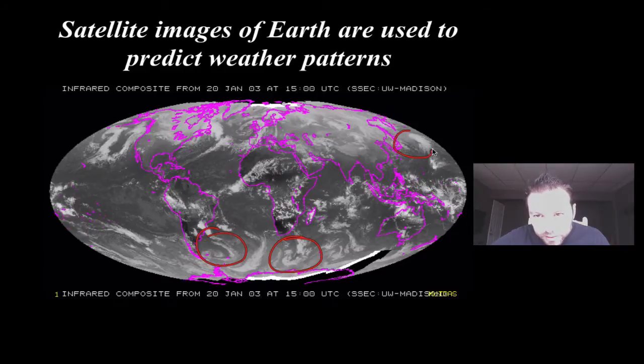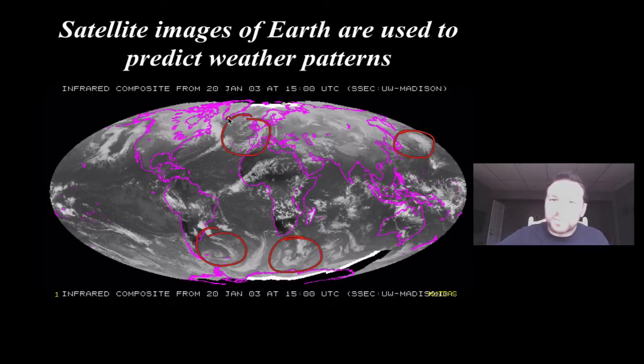And we know with these spiraling shapes, like around here, that those weather patterns, just like around here, are going to move in very predictable ways, or somewhat predictable ways. That'll let us know whether it's going to be coming in or towards our area.